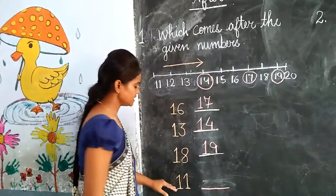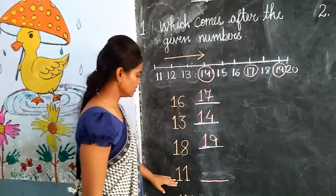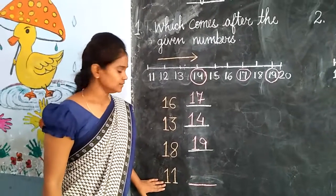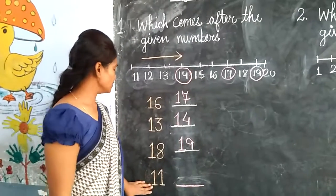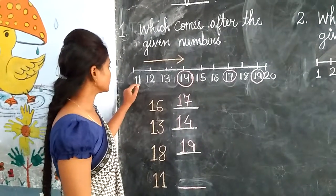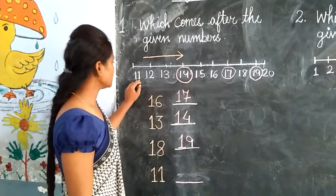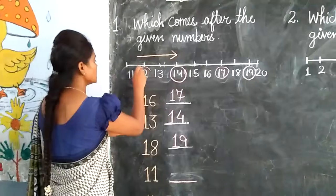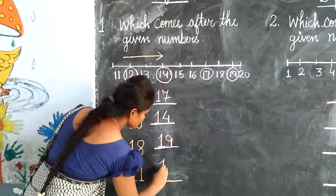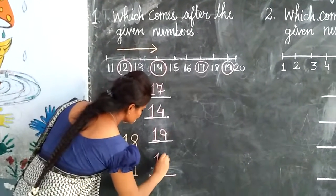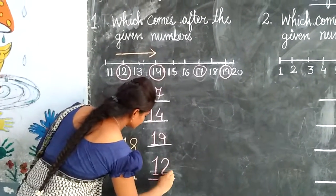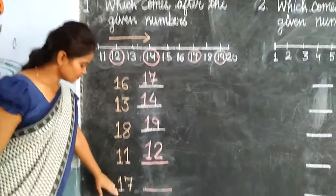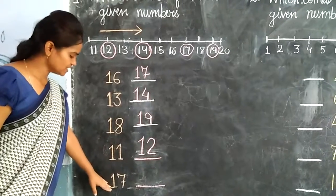Next number is 11. What comes after 11? Now we will count. What comes after 11? Yes — 12. We will write here: 12.